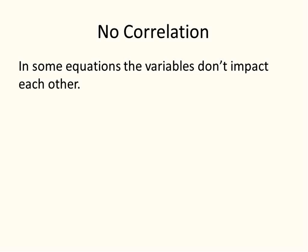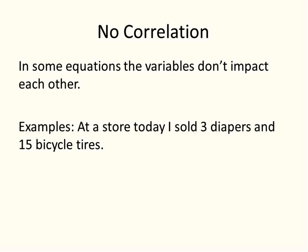And then there's the third kind where there's no correlation at all. In some equations, the variables don't impact each other. You can't say one is dependent, one is independent, one is the input, one is the output. They just don't impact each other. You can be trying to calculate what you sold at a store, and I sold three diapers and 15 bicycle tires. Like they have no relationship to one another. You can say D is for diaper and B is for bicycle tires, and this is what I sold. They don't correlate. Unless there's some kind of crazy cosmos going on, the number of diapers you sell is not going to impact the number of bicycle tires you sell. I picked two completely unrelated things to try and emphasize this point.